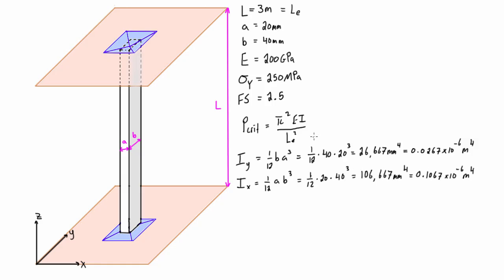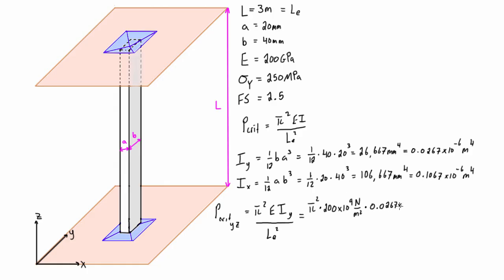Now we have everything to find the critical load in each plane. For buckling in the YZ plane, we use P_crit = π²EI_y / Le². Plugging in the values, we find that P_crit in the YZ plane is equal to 5.9 kilonewtons.